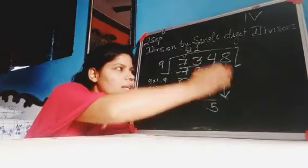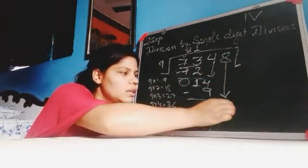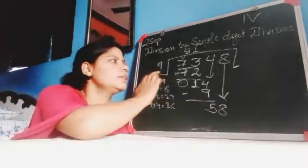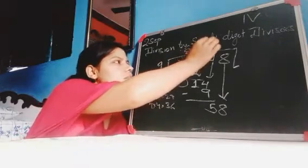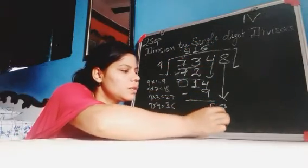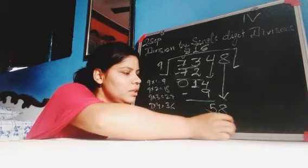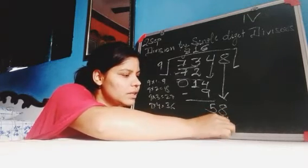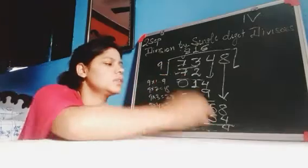Then after that, you write this digit. You know that 9 sixes are 54. Then what is the remainder here? 4.